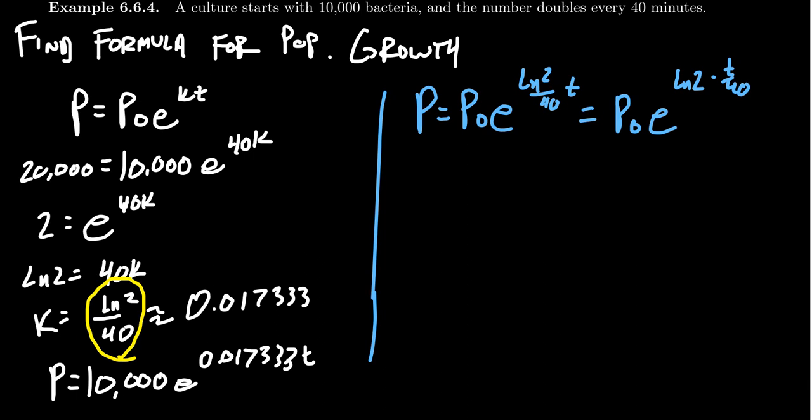But remember, when you have a to the m to the n, if you have an exponent and an exponent, you multiply them together. This means that if you factor the exponents, you can actually break them up in a manner like this. So we can actually rewrite this thing as P₀ times e to the natural log of 2 to the t over 40.